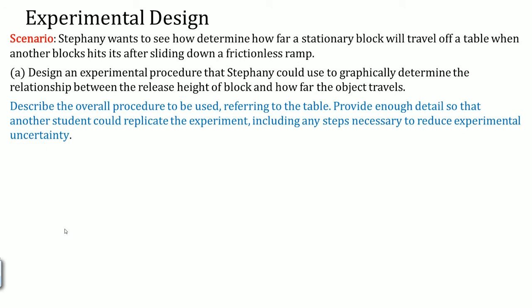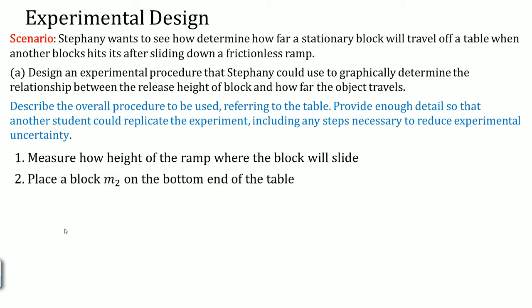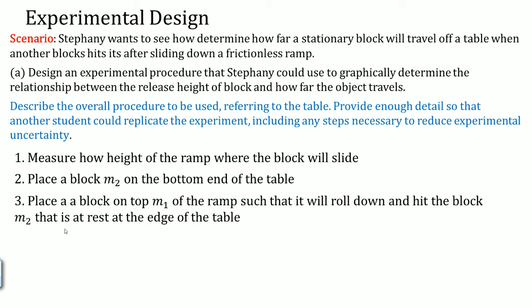Experimental design: one, measure how high the ramp will be where the block slides. Two, place the block M2 at the bottom of the table. Then place a block M1 on top of the ramp such that it will roll down and hit the block M2 that is at rest at the table, so make sure they're in line basically.